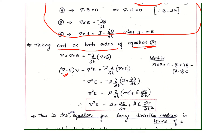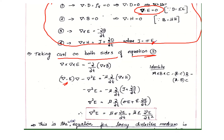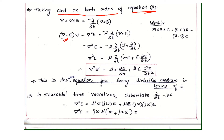The minus signs cancel. Finally, we get mu into partial by partial t of J, where J equals sigma E, and substituting D equals epsilon E, we arrive at: del squared E equals mu sigma partial E by partial t plus mu epsilon partial squared E by partial t squared. This is the wave equation for the lossy dielectric medium in terms of E.